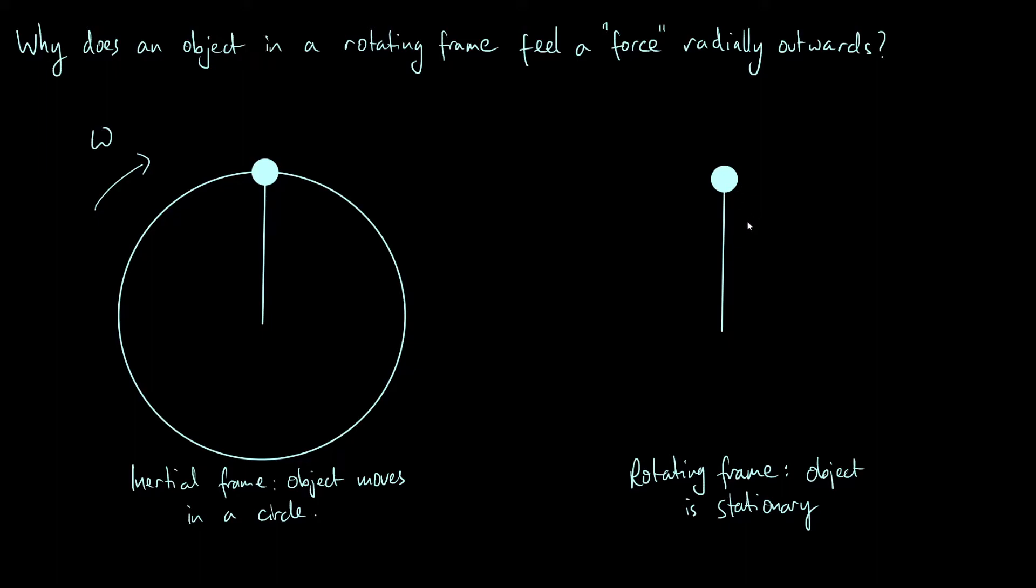Okay, so I'm going to think about two different ways we can explain why we would expect this object to feel an outwards force in the rotating frame. The first one is in terms of the actual forces. We've got actual forces and we've got fictitious forces like the centrifugal force.